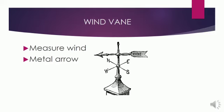Wind vane. The simplest weather measuring device is the wind vane. A metal arrow with a tail is mounted on a pole or roof so that it will turn around. It points in the direction from which the wind is blowing.